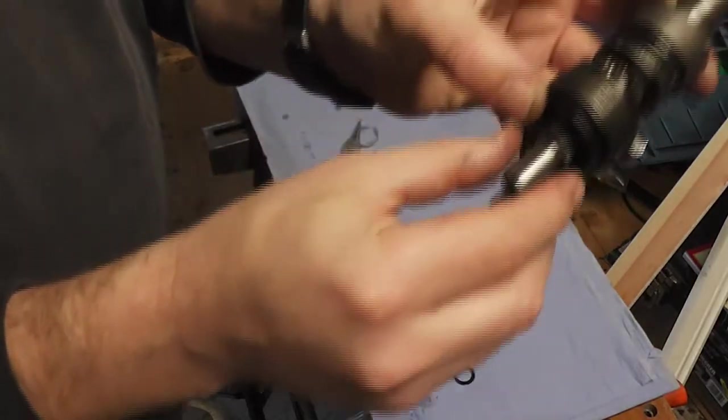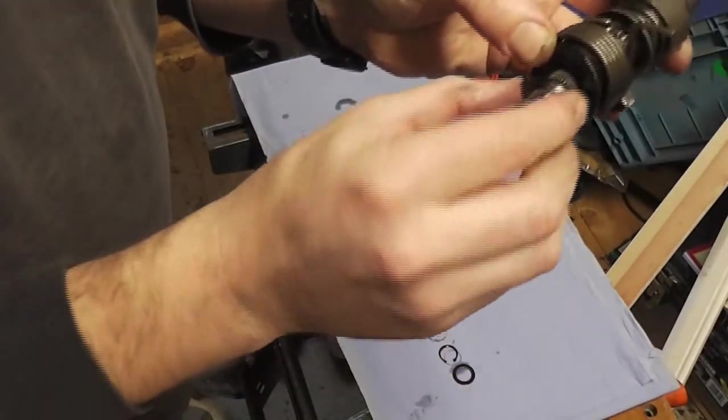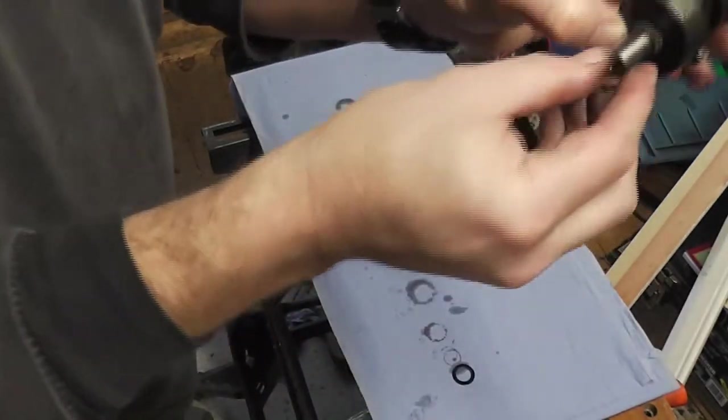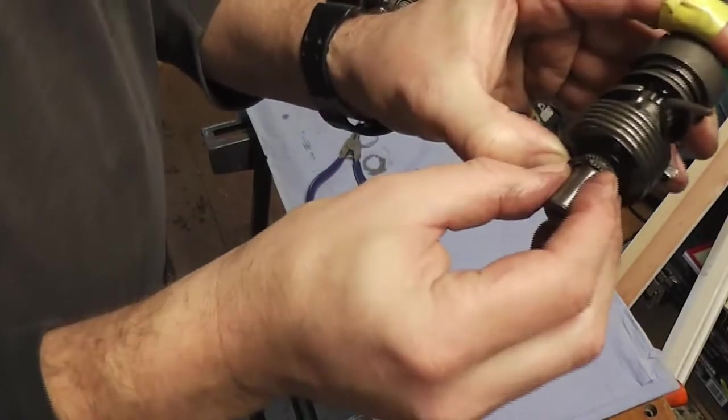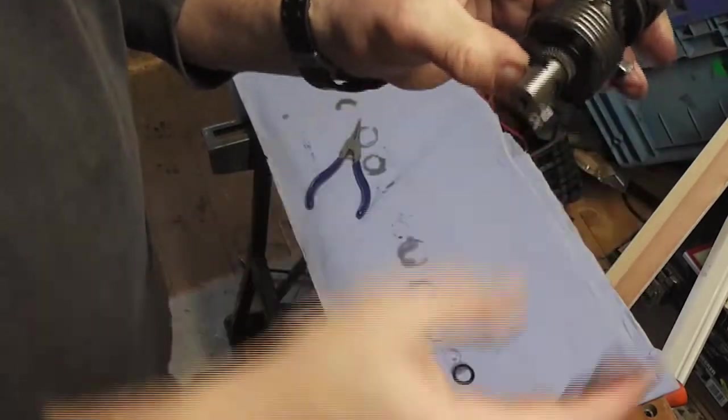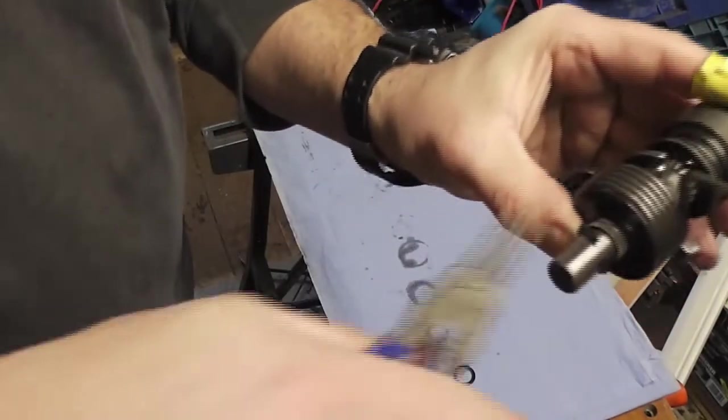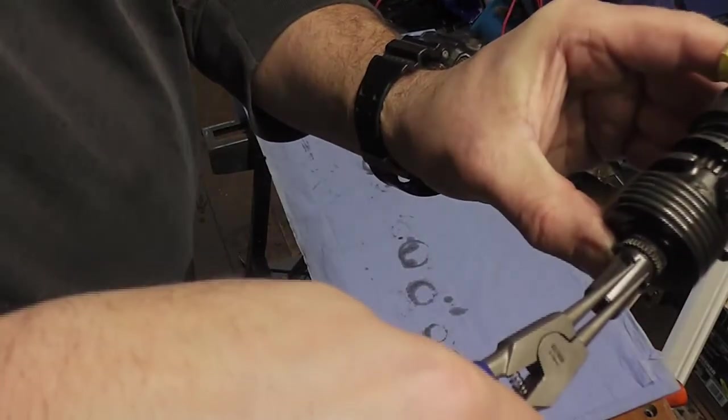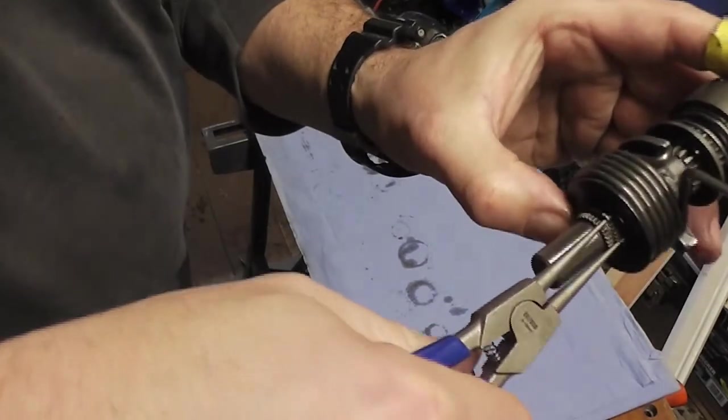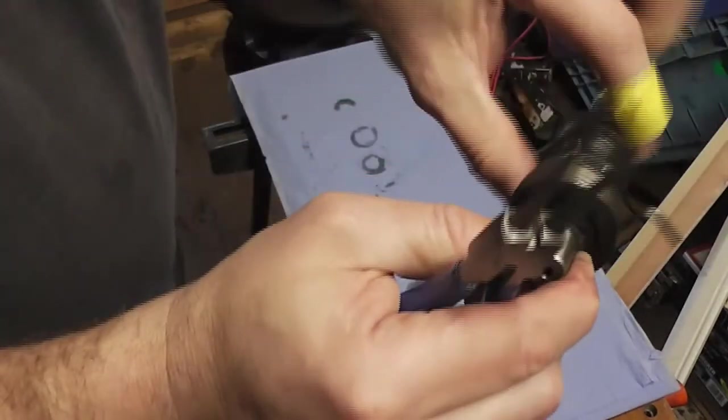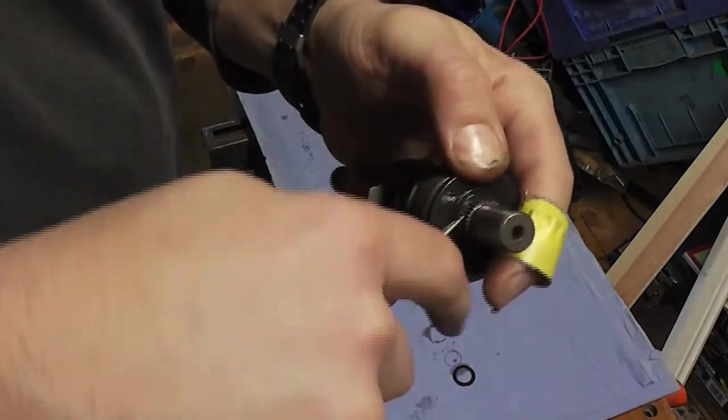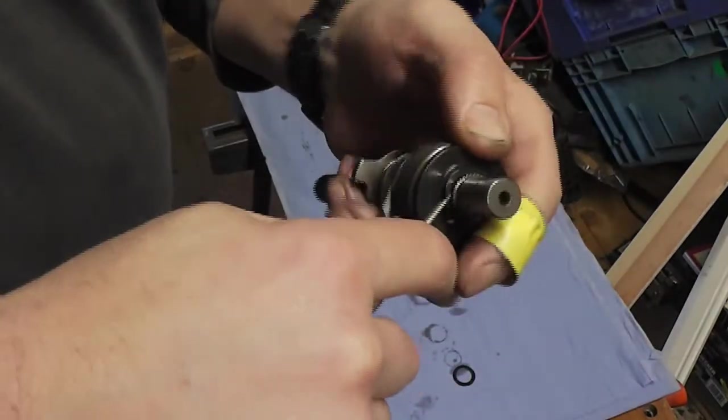Then we have this washer, goes in here. And then we have this last circlip. Which we fit on with our circlip pliers. Make sure that it's in the groove all the way round.